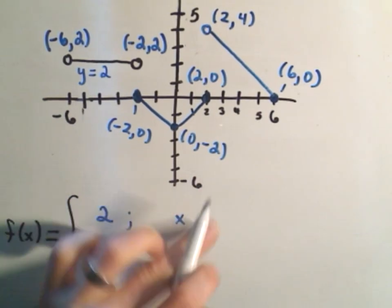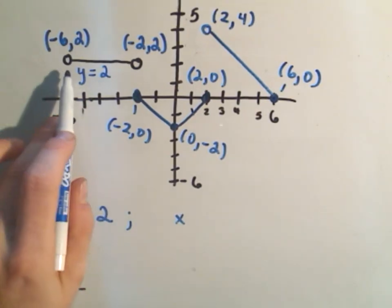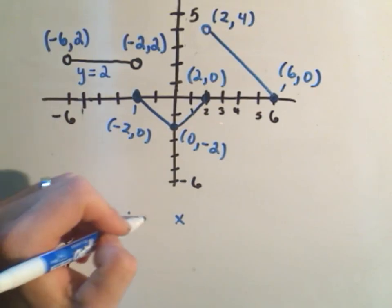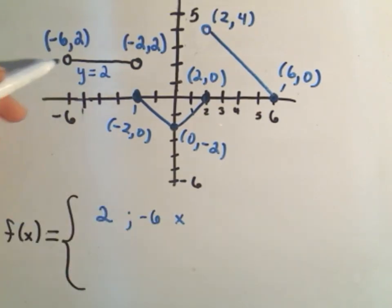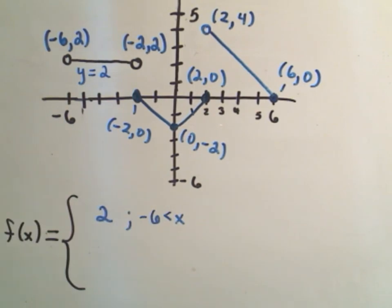So notice the smallest x coordinate that gets used for the straight line part is negative six. But actually, we don't use that. There's an open circle. So that's why we'll make it strictly greater than in this case.